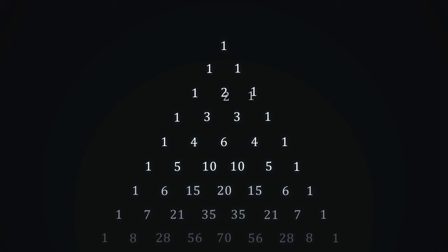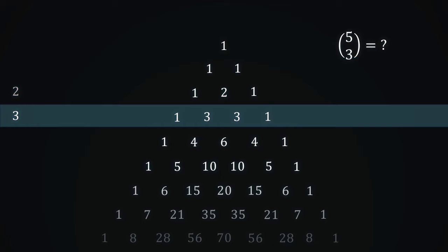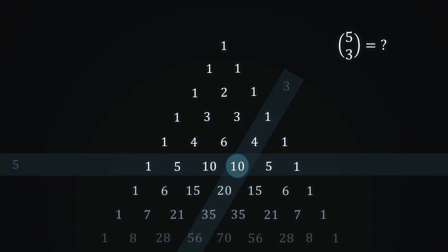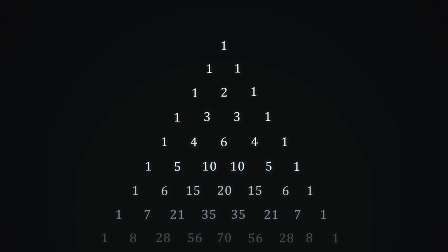Let's find out how much is 5 choose 3. Columns are now shifted, so they become diagonals. It is in the fifth row and the third diagonal. Just don't forget to start counting from zero.